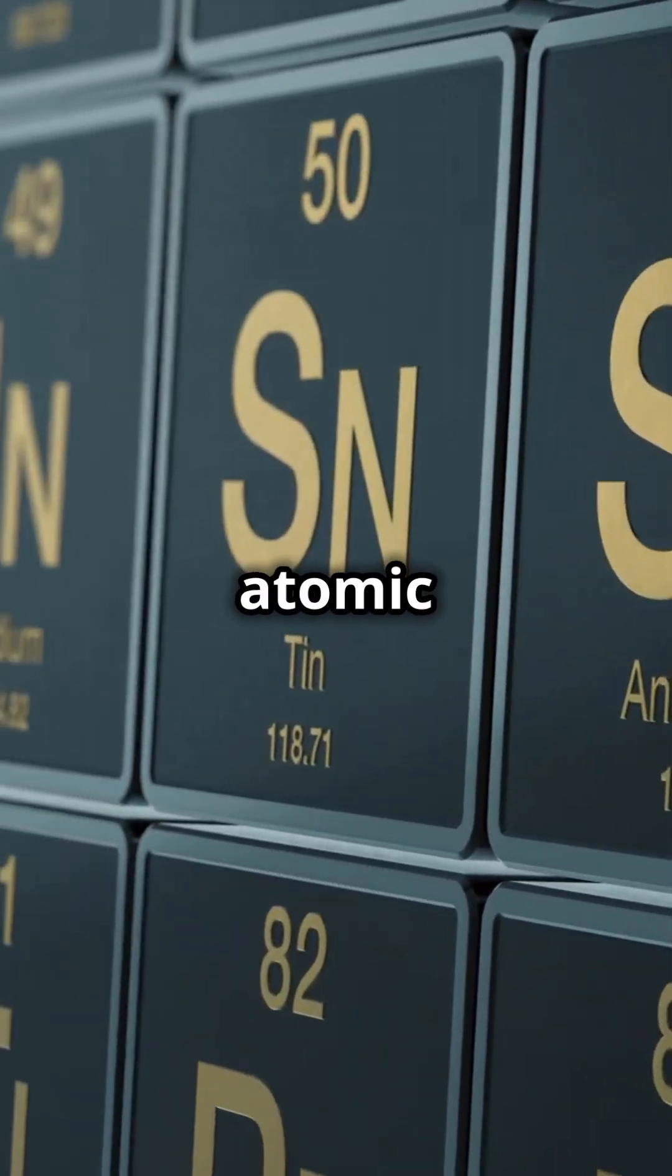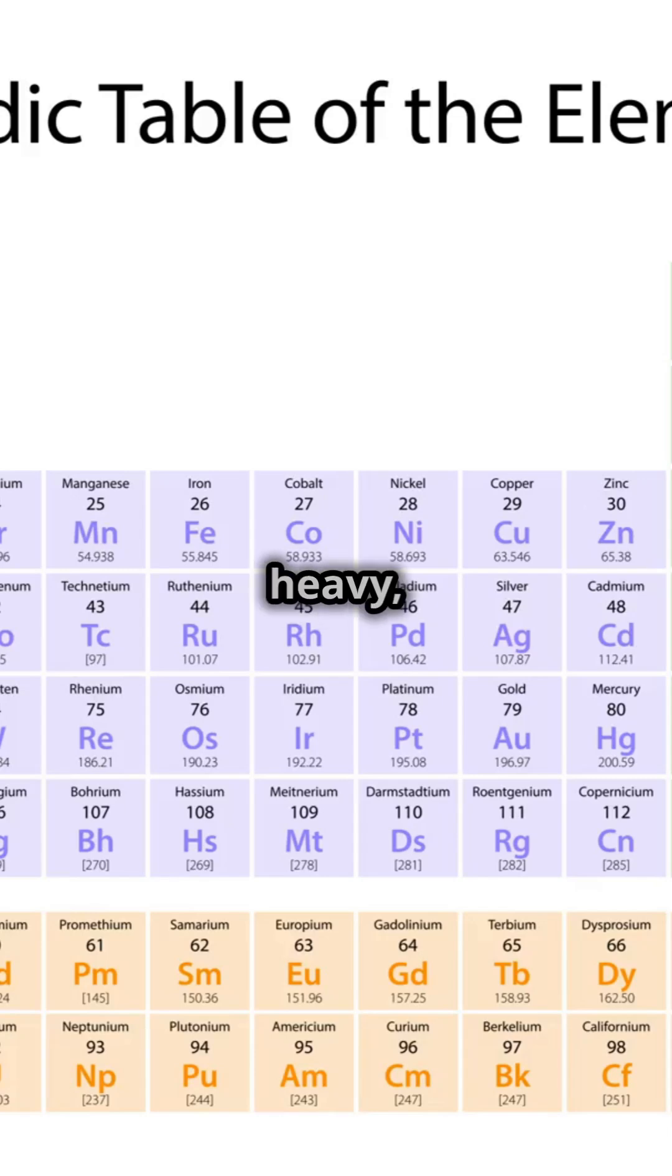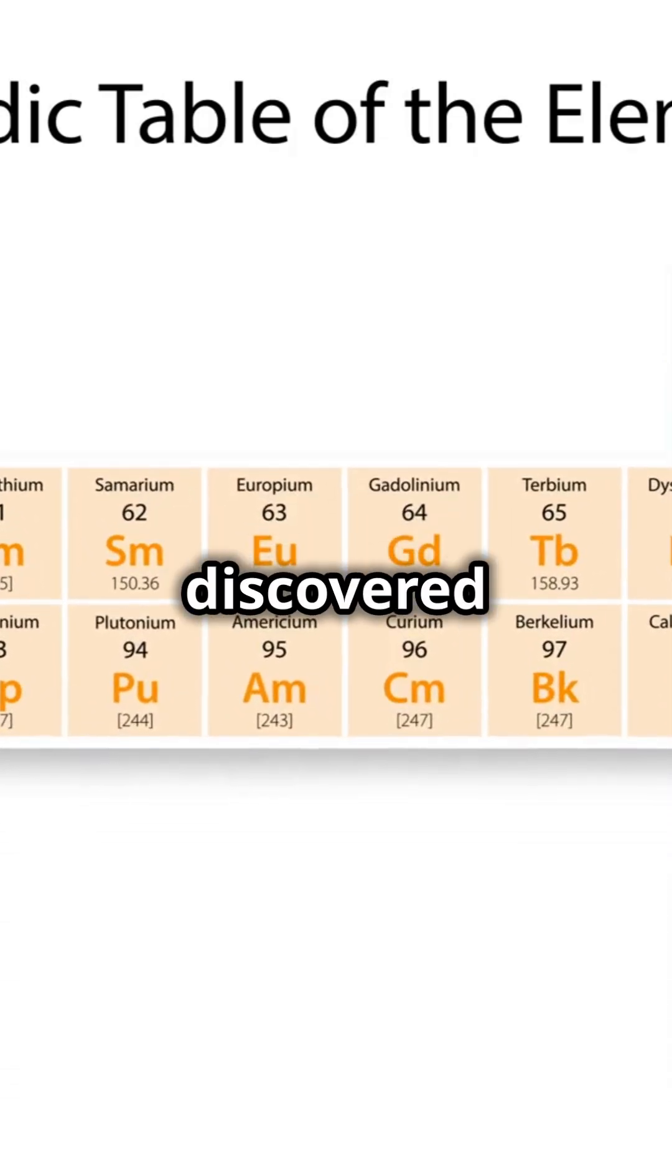Plutonium, symbol Pu and atomic number 94, is one of the most intriguing elements on the periodic table. It's a heavy, radioactive metal that was discovered in 1940.